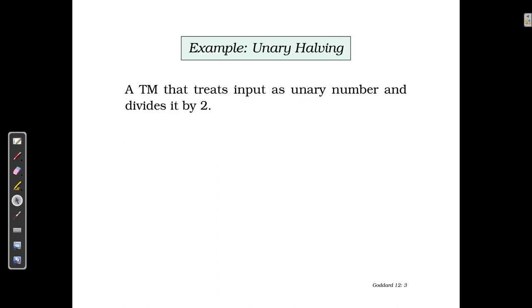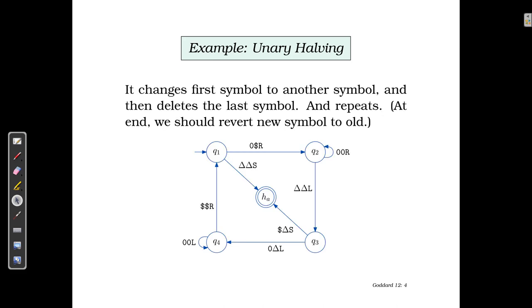Now let's take another example: a Turing machine which treats the input as a unary number and then simply divides it by two. Here is that Turing machine. Notice that the alphabet is very simple.